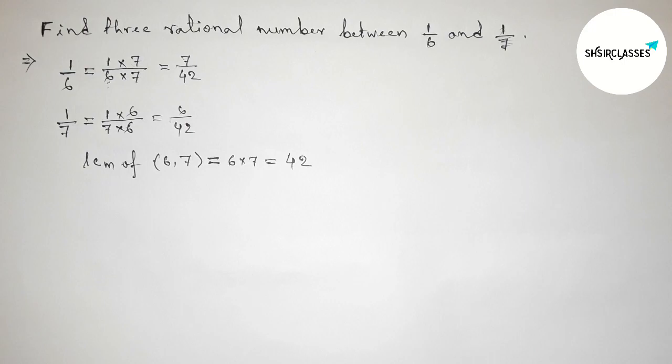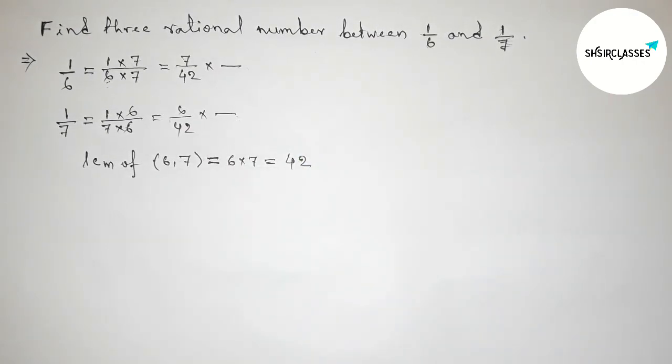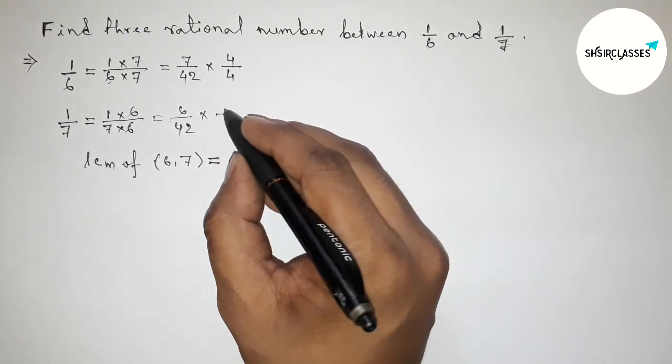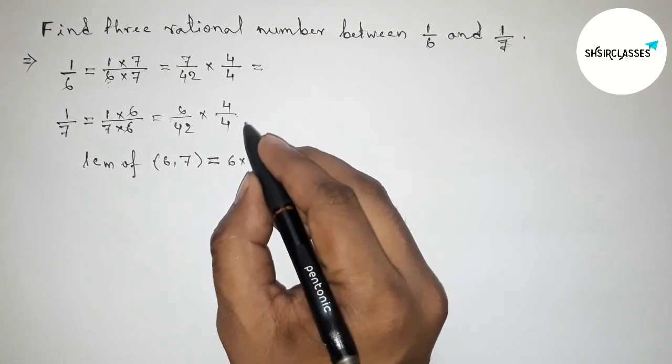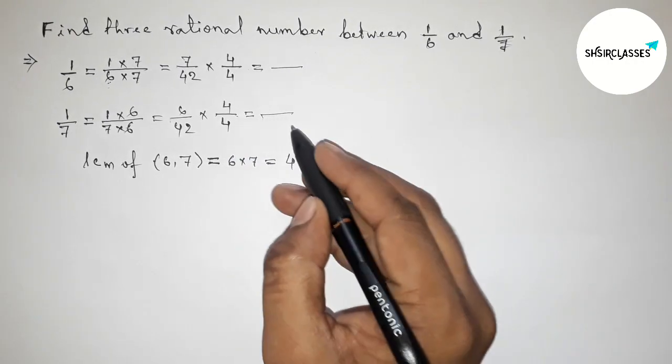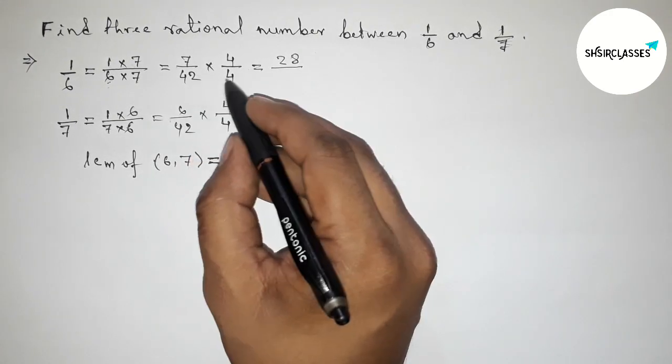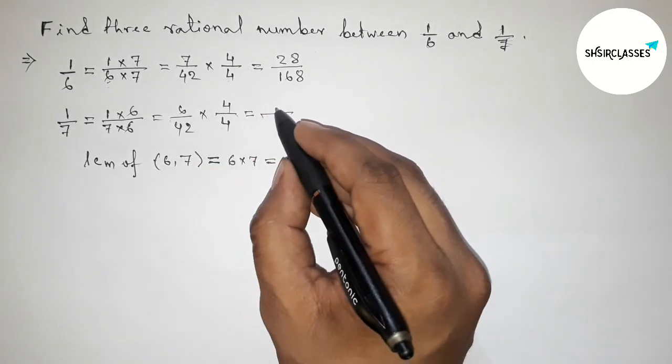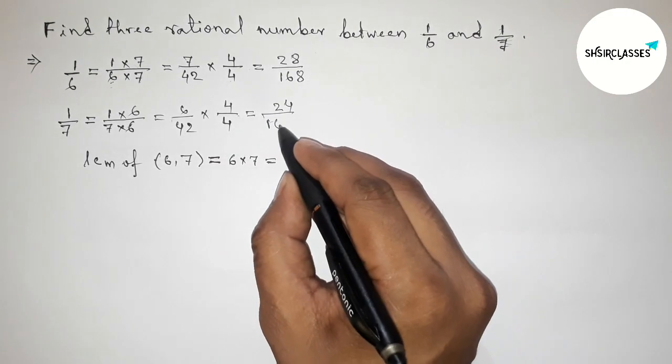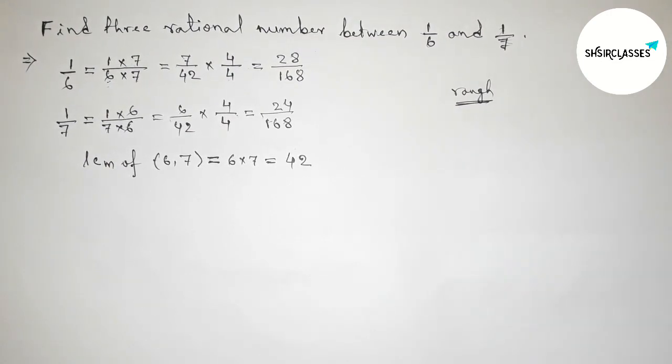Next, again we have to multiply both numbers by a number for 3 rational numbers. So now taking 4 top and down for 3 rational numbers. Again calculating this: 7 fours are 28, so 28/168. And 6 fours are 24, so 24/168.